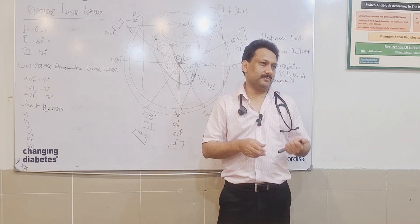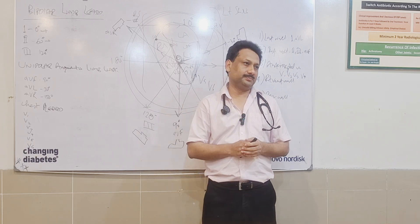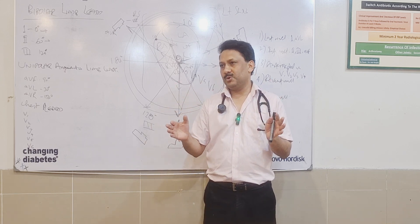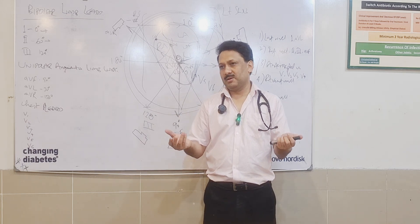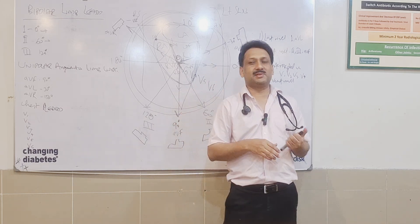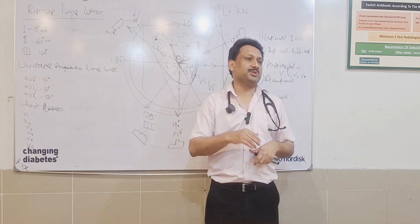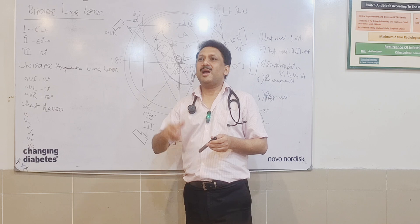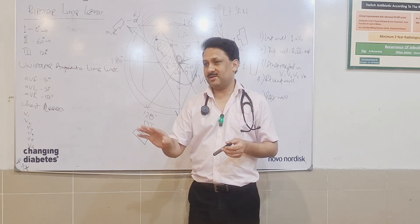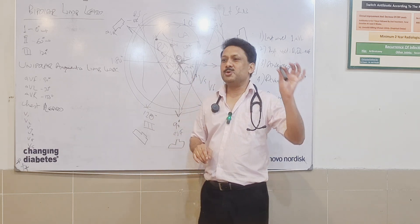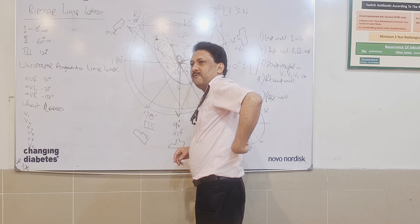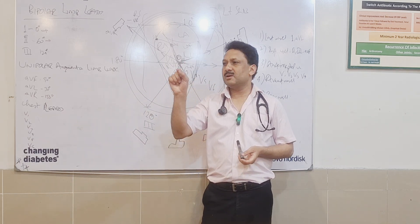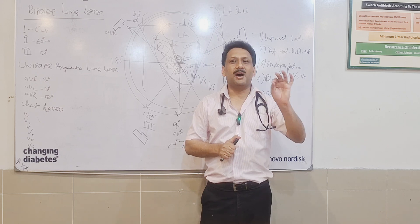Now if we want to see the posterior wall, the concept is clear: to see something in the heart you place cameras. So do you believe we would place those cameras by asking the patient to lie prone and placing them on the back? Actually there are two ways. If you want to see the posterior wall, you place V7 at the posterior axillary line, V8 just beneath the scapula, and V9 adjacent to it.